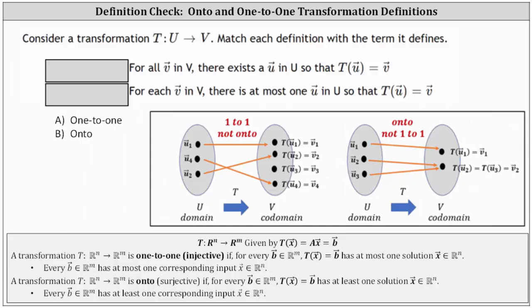The first definition reads: for all vectors v in the vector space V, there exists a vector u in the vector space U such that T of vector u equals vector v. Notice how the wording here is 'there exists a vector u.' It doesn't say how many, but there has to be at least one, so we could reword this as 'there exists at least one vector u.' This fits more along with the definition we've been using.